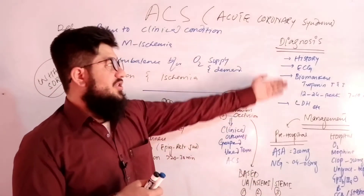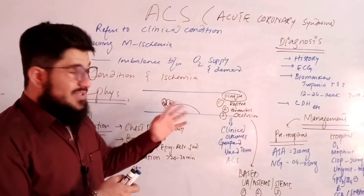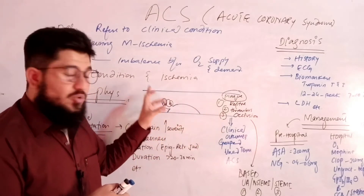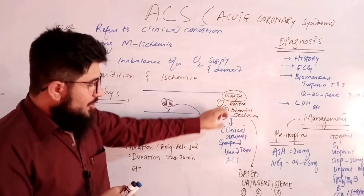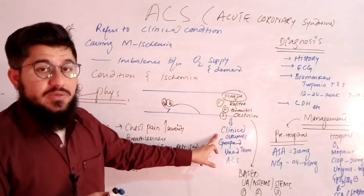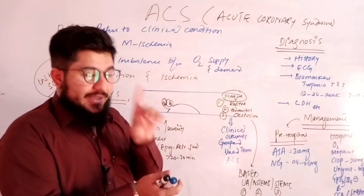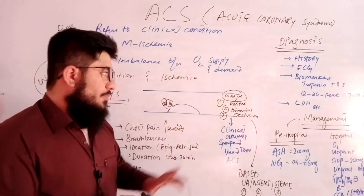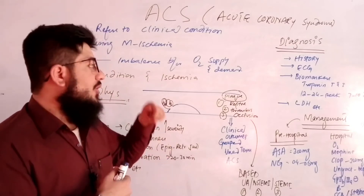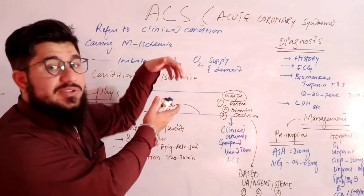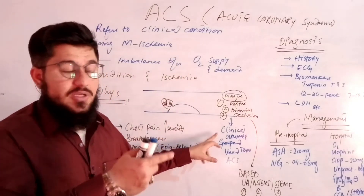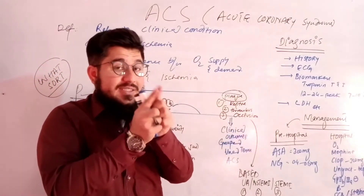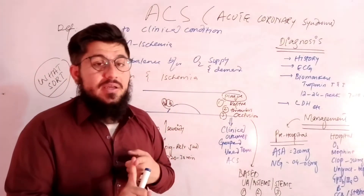The differences between these conditions will be discussed according to ECG in the diagnosis section. When plaque ruptures, thrombus formation takes place, and occlusion results — these lead to clinical outcomes. Those clinical outcomes are then grouped together under a single term: acute coronary syndrome.